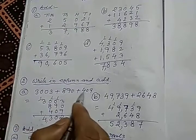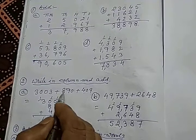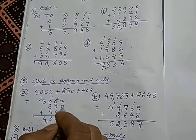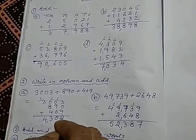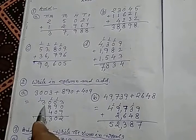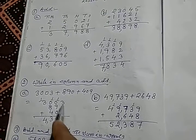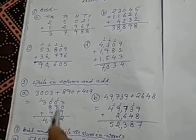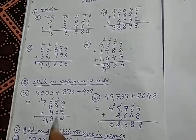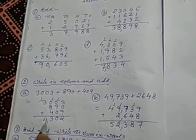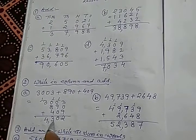We have to first arrange these numbers in column. We have arranged it like this, 3,003 plus 890 plus 409. After adding, this is also carry plus. After adding these three numbers in column, we have the result 4,302.